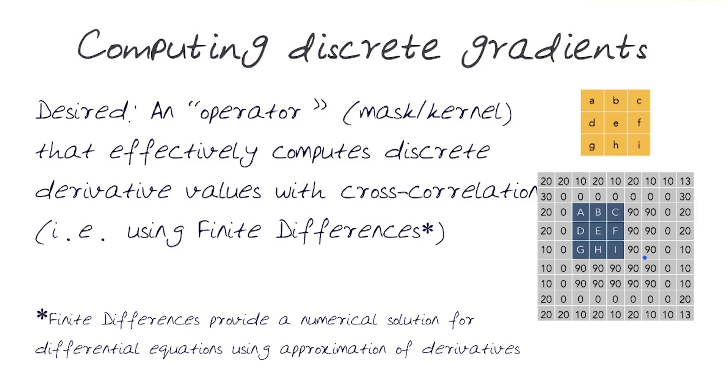How do we compute discrete gradients? What we want is to come up with an operator, a mask or a kernel - remember this is what we've looked at before - that effectively computes the discrete derivatives using cross-correlation.